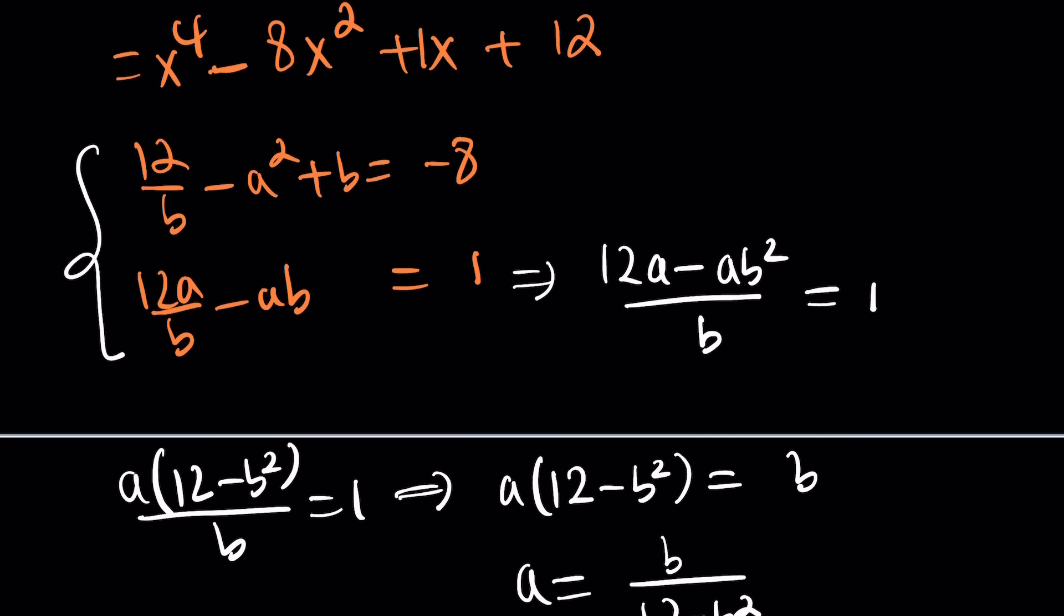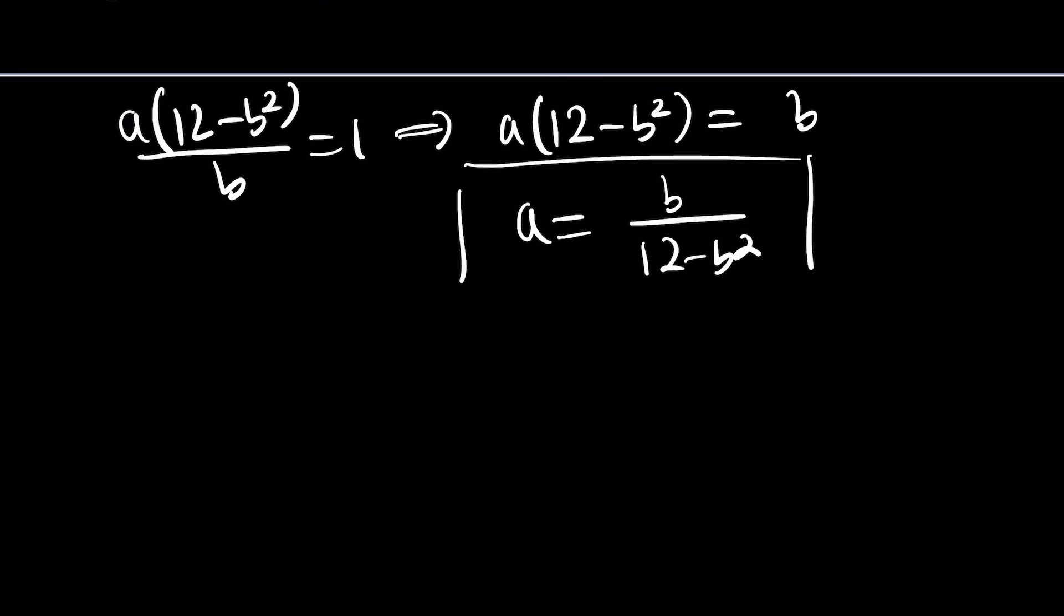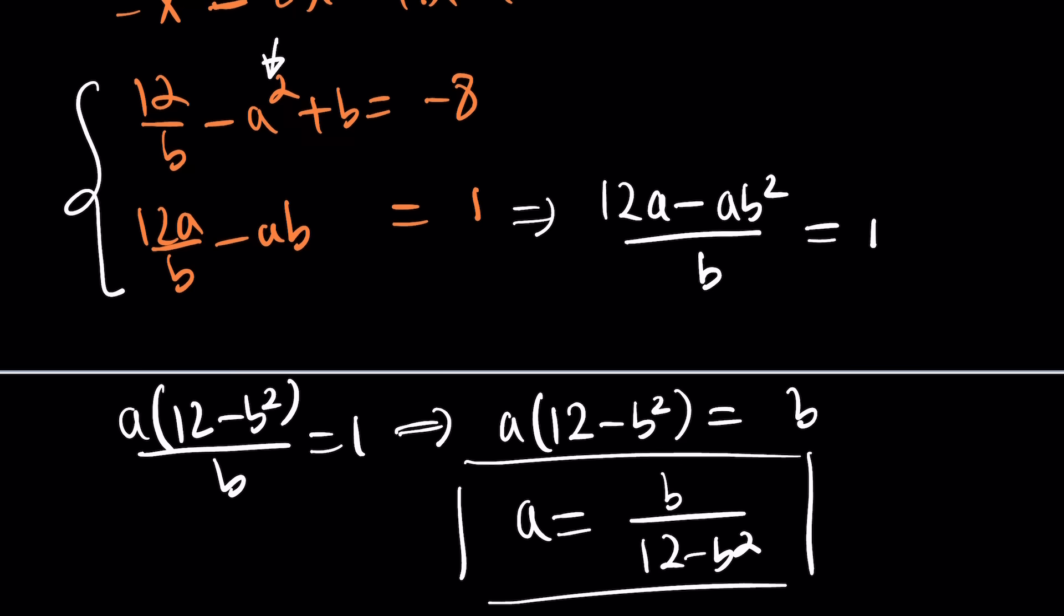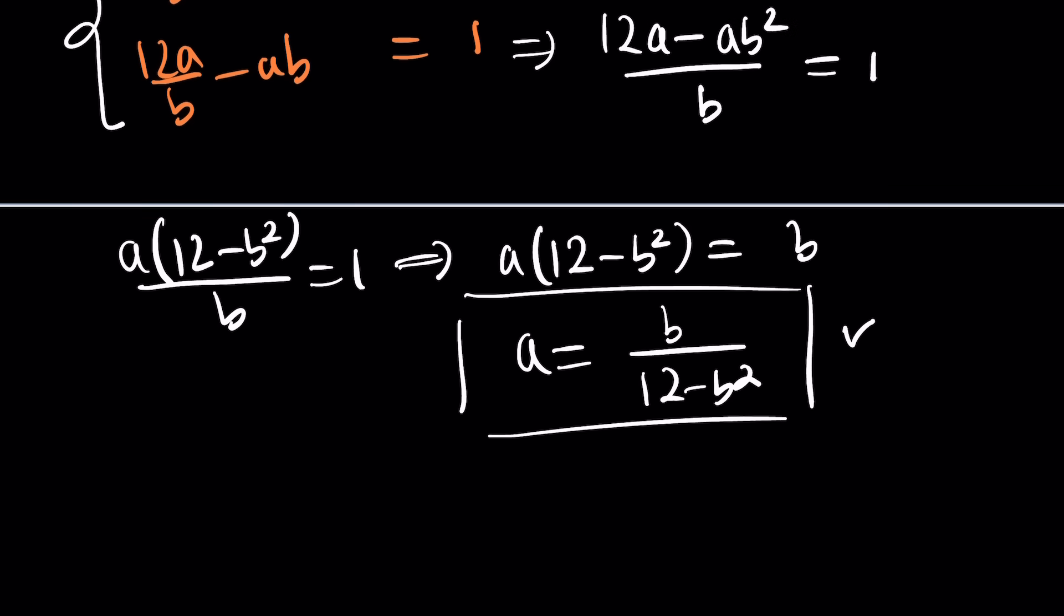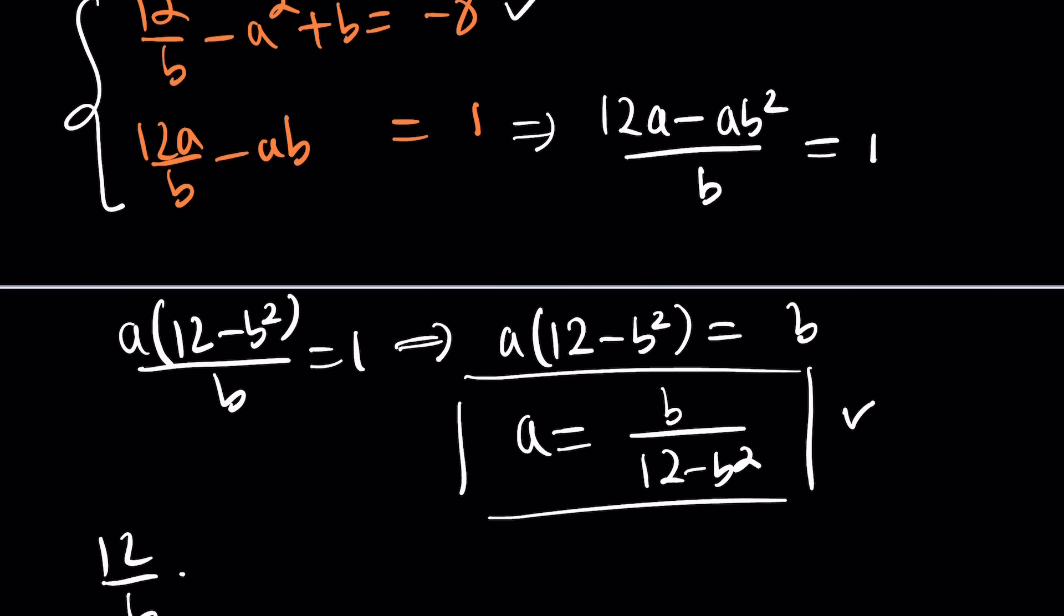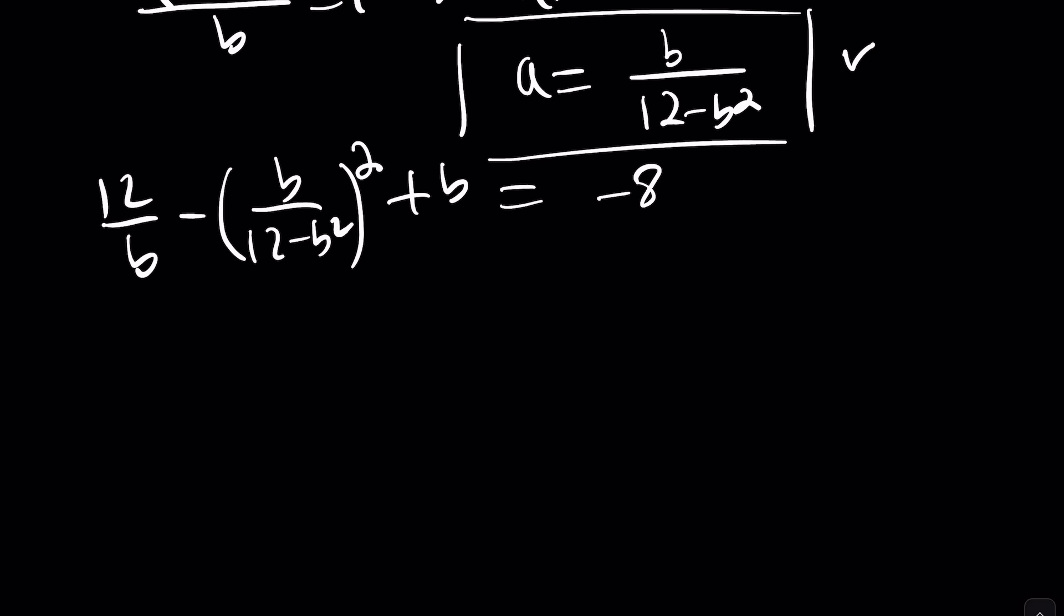You could also try to isolate something else, but that would be harder. So, this is something you can use in the first equation. Let's go ahead and plug it in. 12 over b minus a squared plus b equals negative 8. Single variable, but very complicated.